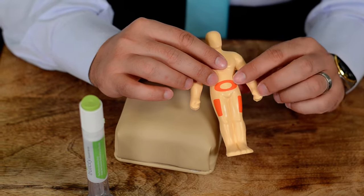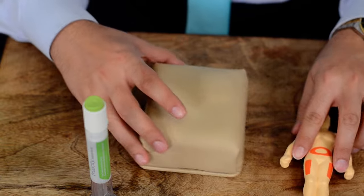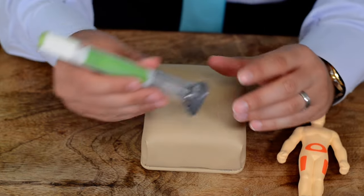Most people prefer the thigh or the abdomen. Now we will consider this is your abdomen, and this is our Trulicity pen.